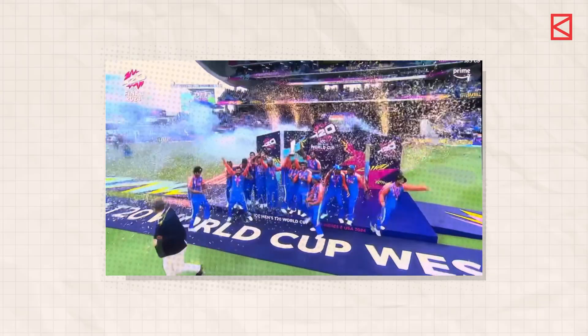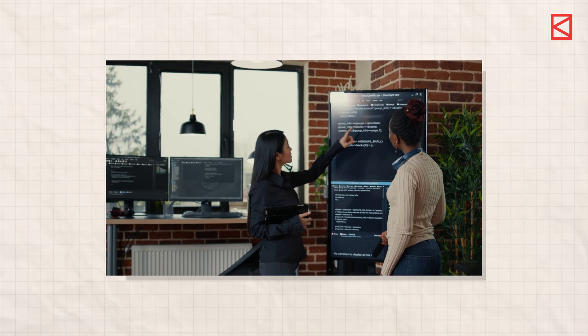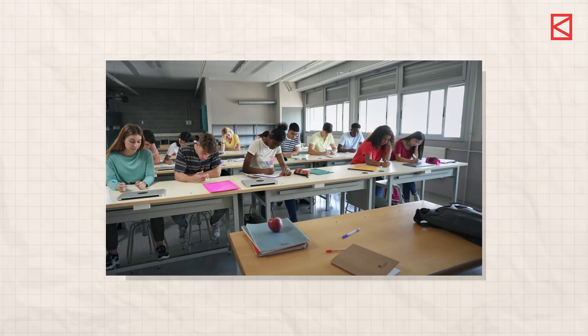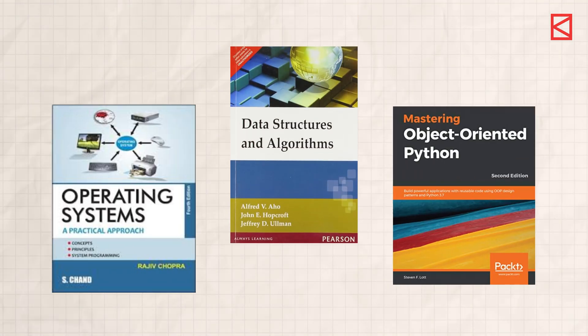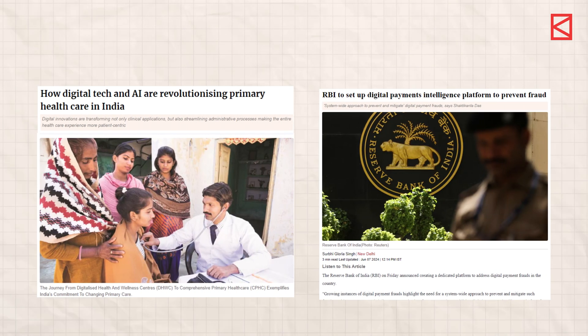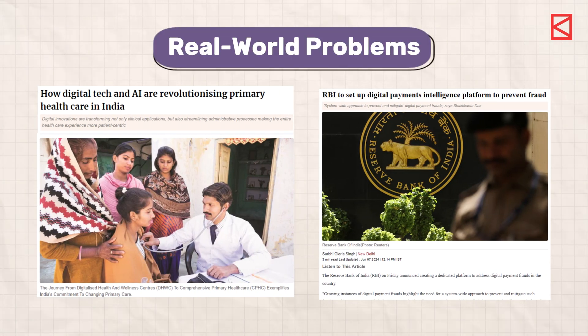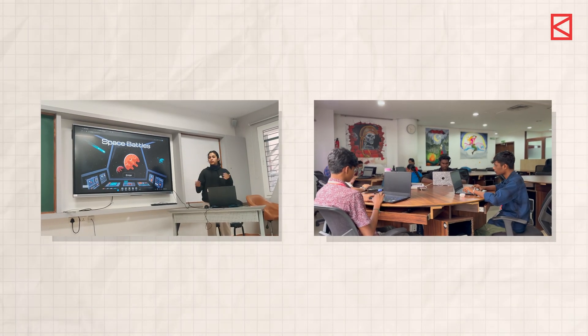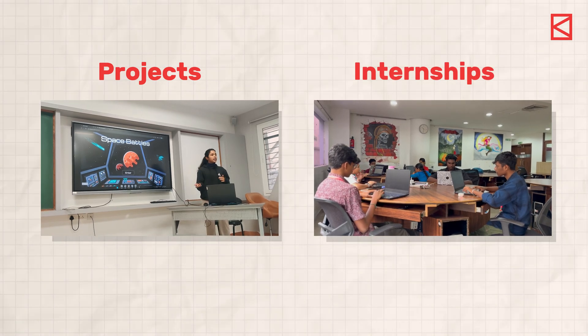The same thing applies for engineers too. Just like in cricket, becoming a top software engineer isn't about acing exams. While understanding theory and principles is crucial, you can only turn pro when you tackle real-world problems. You can do this by working on projects, internships, open source contributions, and more. So get out there, take on challenges, keep pushing your boundaries — that is how you will achieve greatness too.